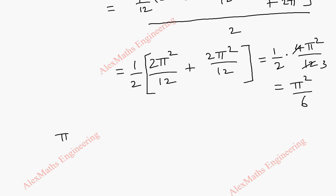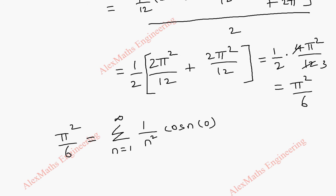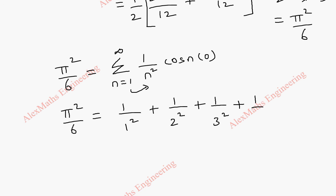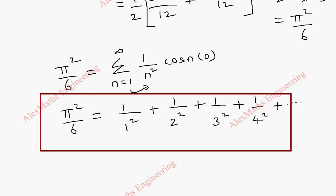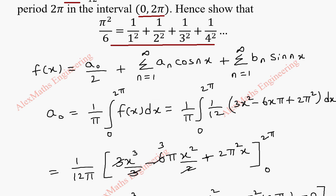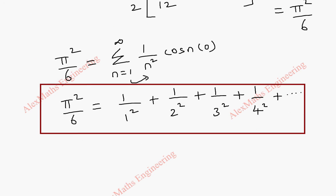So f of x evaluated at x equal to 0 is pi squared by 6. On the other side we have sigma n equal to 1 to infinity of 1 by n squared times cos nx. Since x is 0, cos 0 is 1, so expanding the sigma gives 1 by 1 squared plus 1 by 2 squared plus 1 by 3 squared and so on. Thus we prove the second part of the question: pi squared by 6 equals 1 by 1 squared plus 1 by 2 squared plus 1 by 3 squared plus 1 by 4 squared and so on.